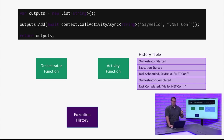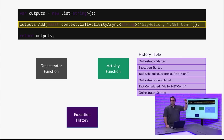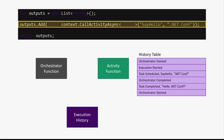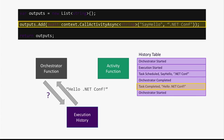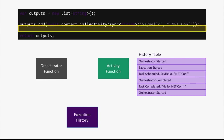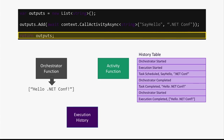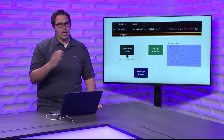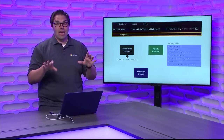What happens when the orchestrator wakes back up is extremely important to understand when you're writing and debugging these. The orchestrator function is not going to pick up from where it left off. What's going to happen is it's going to start from the very top of the orchestrator again. It starts at the top, does that first line of code — create a new list of strings — goes to the second thing, sees the await, and is supposed to await an activity. This time it goes to the execution history and says: have I already done this thing? And the execution history says yes — the sayHello function already said hello to .NET Conf. So the orchestrator says cool, let me go on to the next step, and continues on with its execution. If I had other calls, the orchestrator would continue to the next call, schedule the work, go back to sleep, wake up, continue, schedule some more work, go back to sleep. This can happen with really complex patterns too.